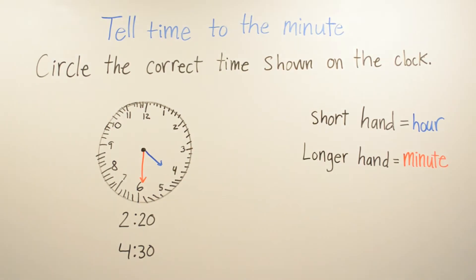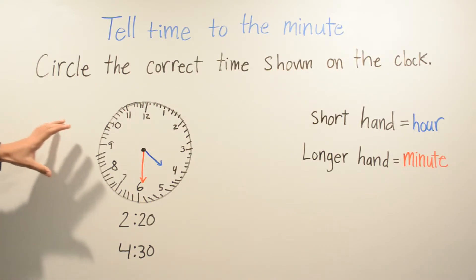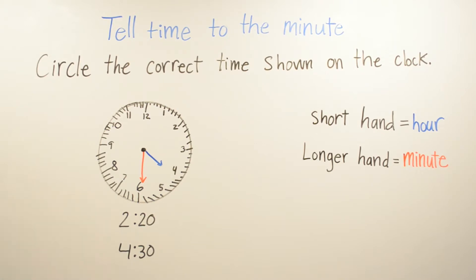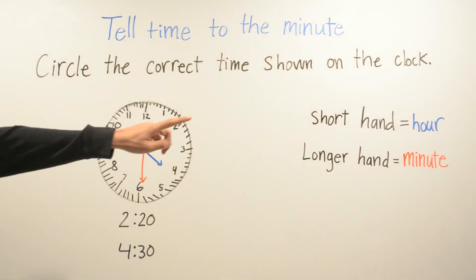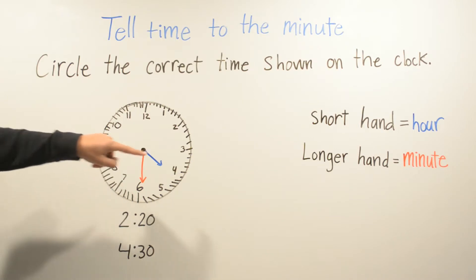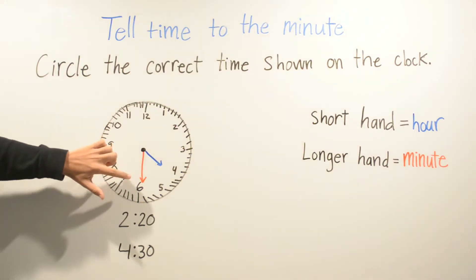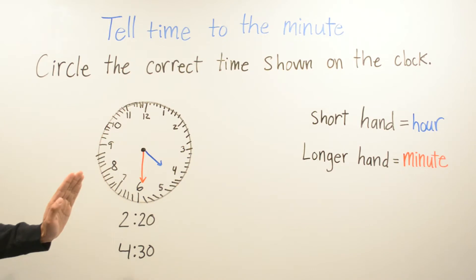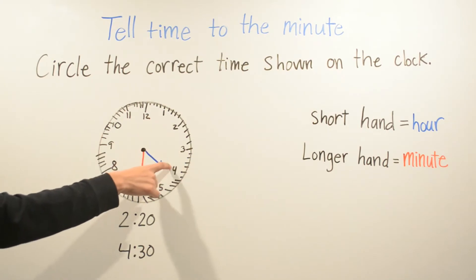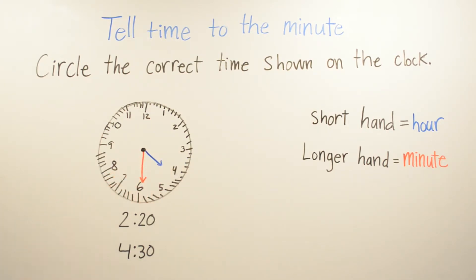For this problem, we have to circle the correct time shown on the clock. Let's find the hour to find which answer is correct. The smaller hand, which is the hour, is on the 4. And the longer hand, which is the minute, is on the 6. So the hour is 4, and counting the minutes: 5, 10, 15, 20, 25, 30. So the answer is 4:30.